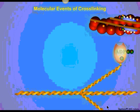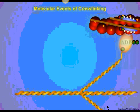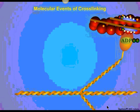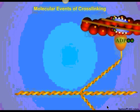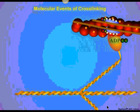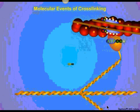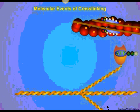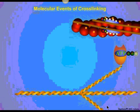The myosin head attaches loosely to actin, then releases inorganic phosphate, causing tight binding. Proteins in the myosin head undergo a conformational change, repositioning the angle of attachment and pulling the actin along the myosin — the power stroke. After pulling, myosin exchanges ADP for a new ATP molecule, releasing from actin, resuming its relaxed conformation, and the cycle repeats.